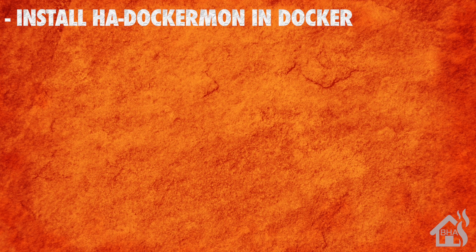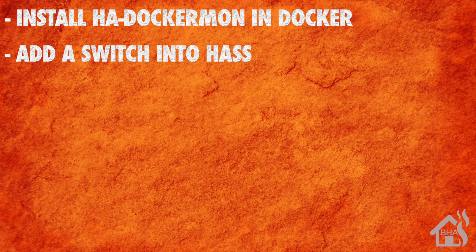It runs as itself a Docker container. You'll be able to use the REST API of HA Dockermon to create switches, sensors, and all kinds of cool stuff, and we're going to show you how to do that here in this video. We're going to start by installing HA Dockermon in Docker, and once we do that we're going to add a switch into Home Assistant that will allow us to turn the container on and off.